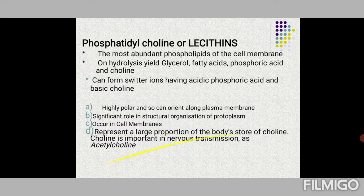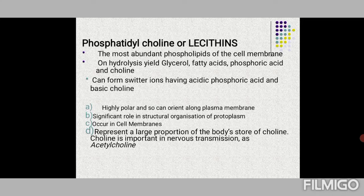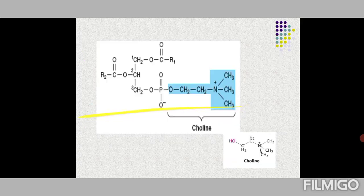Lecithin's functions: it is highly polar so it orients along the plasma membrane. It plays a significant role in structural organization of the protoplasm and membrane formation of cellular organelles. Uniquely, lecithin represents the major storage molecule of choline, which is important in nervous transmission as acetylcholine — lecithin is a major storage form of choline in the body.